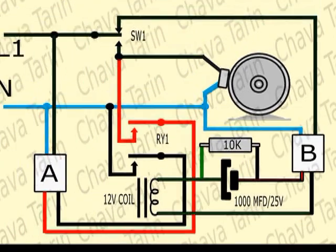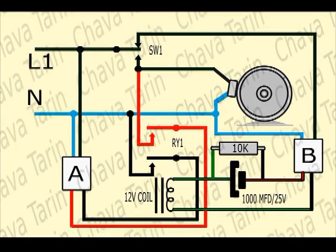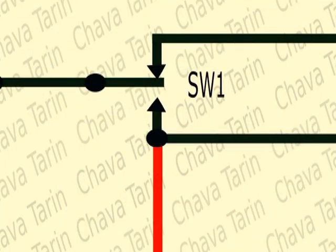The figure shows a double pole switch labeled SW1. When the switch is at the position shown in this figure, the motor is off.